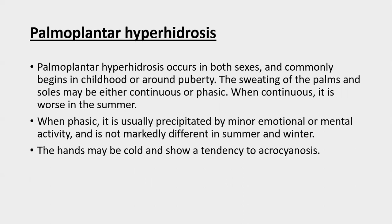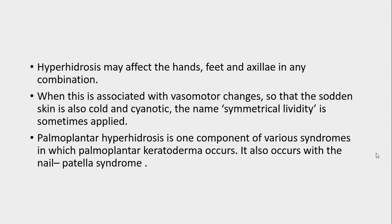Palmoplantar hyperhidrosis is the most common presentation. It occurs in both sexes and commonly begins in childhood or around puberty. Sweating of palms and soles may be either continuous or phasic — when continuous it is worse in summer; when phasic, it is usually precipitated by minor emotional or mental activity and is not markedly different between seasons. Hands may be cold and show tendency to acrocyanosis. Hyperhidrosis may affect hands, feet, and axilla in any combination. When associated with vasomotor changes, the condition is called symmetrical lividity.